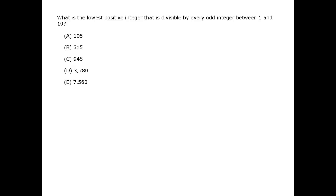In this question, every odd integer between 1 and 10 means the numbers 1, 3, 5, 7, and 9.